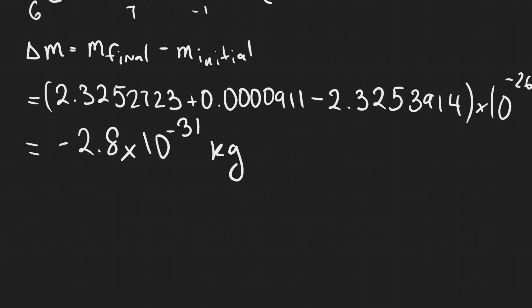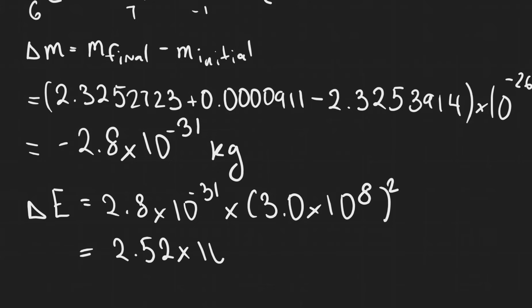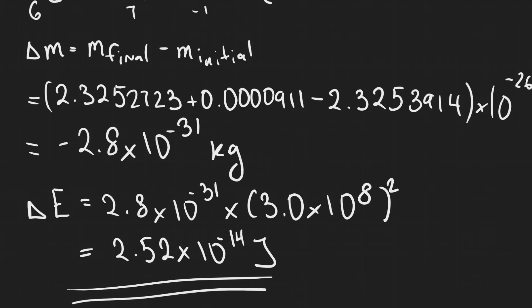That's a very, very small amount of mass that we have actually lost. This amount of mass corresponds to an amount of energy that has been released, delta E. We take the absolute value of the mass, 2.8 times 10 to the minus 31, and multiply by c squared, which is 3.0 times 10 to the 8 squared, giving us around 2.52 times 10 to the power of minus 14 joules. This may seem tiny, but this is the energy released from a single reaction, which is actually very large.